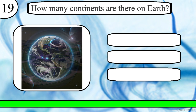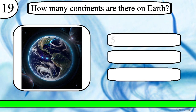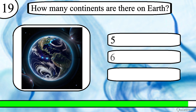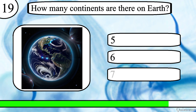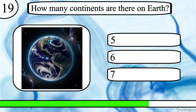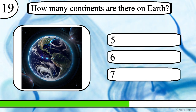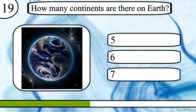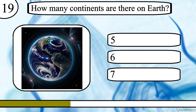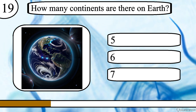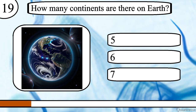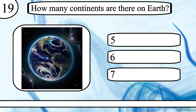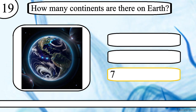Question 19. How many continents are there on Earth? Five, six or seven? The correct answer is seven.